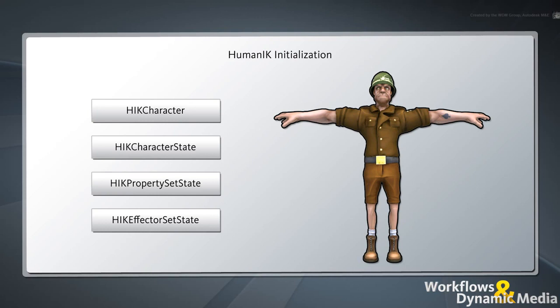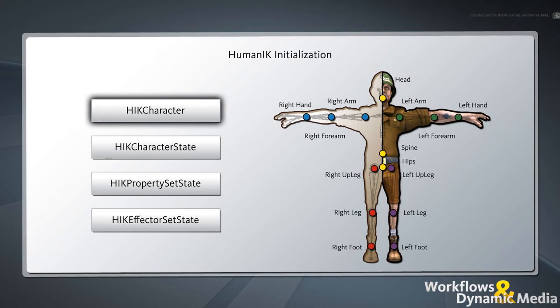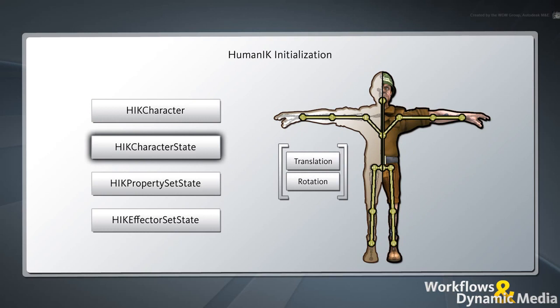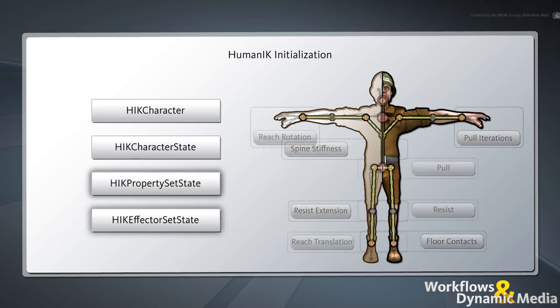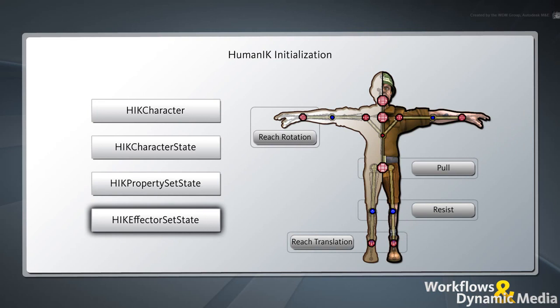In the previous movie, we initialized our character for HumanIK by creating the following components: an HIKCharacter object to represent the HumanIK-enabled character; an HIKCharacterState object to store the character's stance based on the translation and rotation of each of its nodes; an HIKPropertySetState object to configure how the HumanIK solvers will handle the character; and an HIKEffectorSetState object to store the target positions for each of the character's body parts and associated constraints.